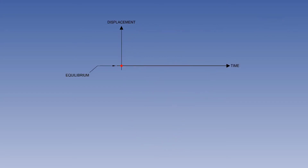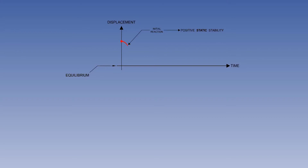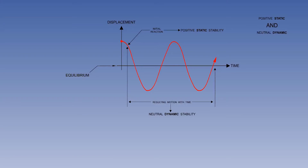This next type of dynamic stability is called undamped oscillation. The red dot is displaced from equilibrium, and when the disturbing force is removed, the initial reaction is to start back towards equilibrium — illustrating positive static stability. Over a period of time, the dot continues to oscillate through equilibrium with no reduction, illustrating neutral dynamic stability. We have positive static and neutral dynamic stability.